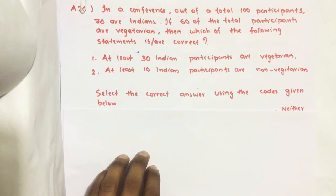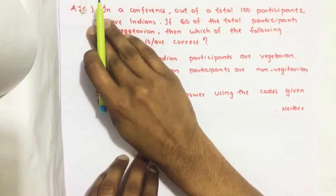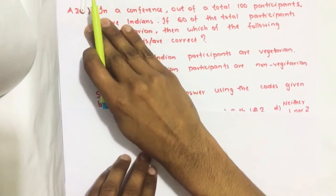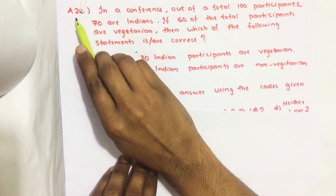Hello everyone. Here I am going to solve 2019 CSAT question number 20 from question paper series A.